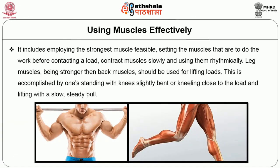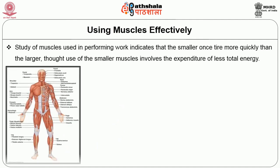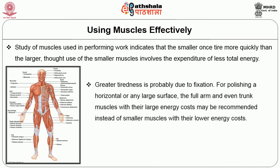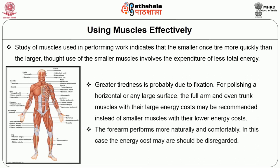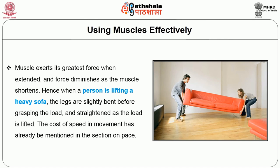Using the muscles effectively includes employing the strongest muscle feasible, setting the muscles that are to do the work before contacting a load, contracting muscles slowly, and using them rhythmically. Leg muscles, being stronger than back muscles, should be used for lifting loads by standing with knees slightly bent or kneeling close to the load and lifting with a slow steady pull. Studies indicate that smaller muscles tire more quickly than larger ones, though use of smaller muscles involves expenditure of less total energy.